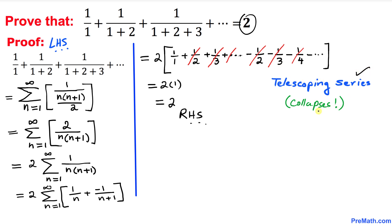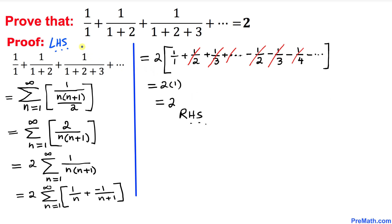This kind of series is called a telescoping series because it simply collapses. Thus we have proven that the left hand side equals the right hand side. Thanks for watching and please don't forget to subscribe to my channel for more exciting videos, bye!